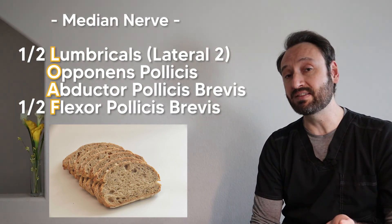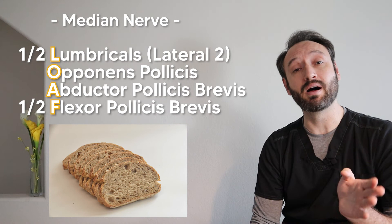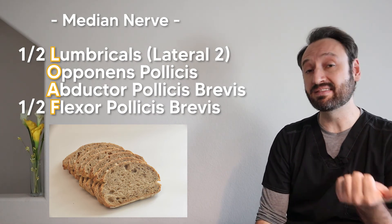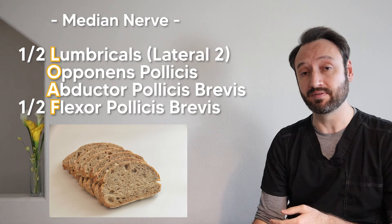and then half of the flexor pollicis brevis. So the flexor pollicis brevis has two heads. One gets the ulnar nerve and one gets the median nerve. So basically if you're summarizing it, the median nerve, it's kind of this side of the lumbricals and then most of the thenar eminence. So just remember half loaf half.